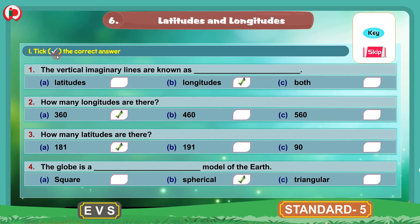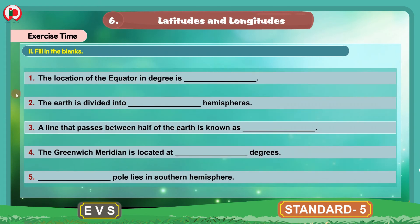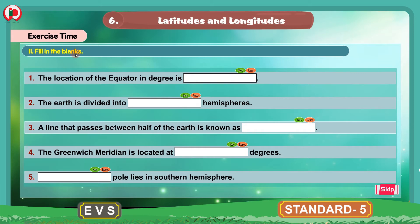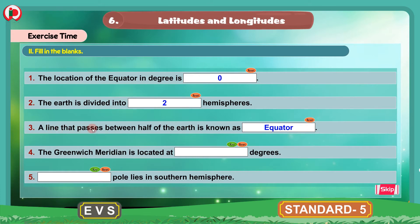Children, this is about the first bit. Now we will move to the next bit: fill in the blanks. We have 5 sentences with blanks and we have to write the correct answers. Question 1: The location of the equator in degree is 0. Question 2: The earth is divided into 2 hemispheres. Question 3: A line that passes between half of the earth is known as equator.